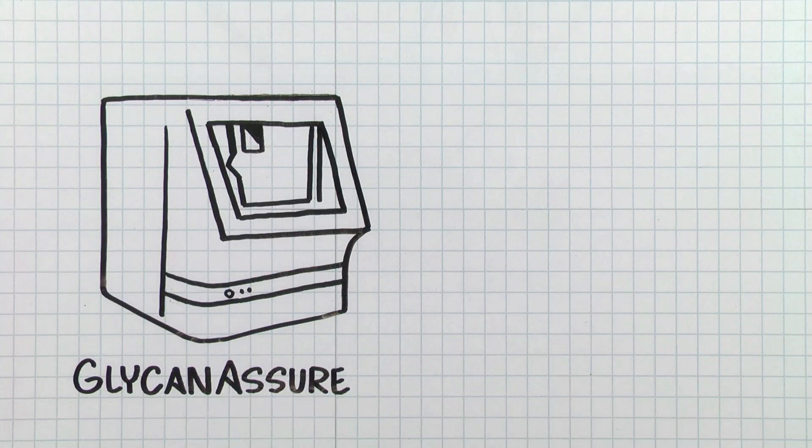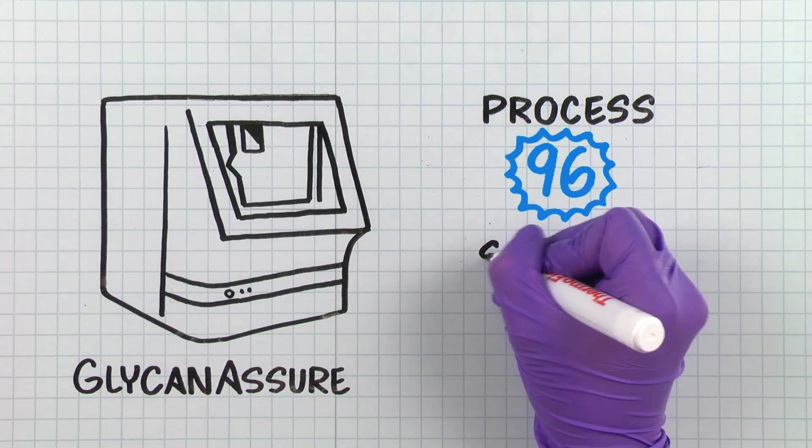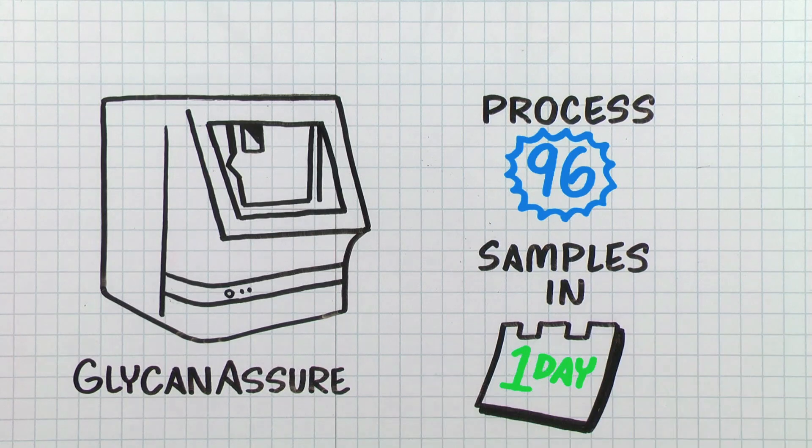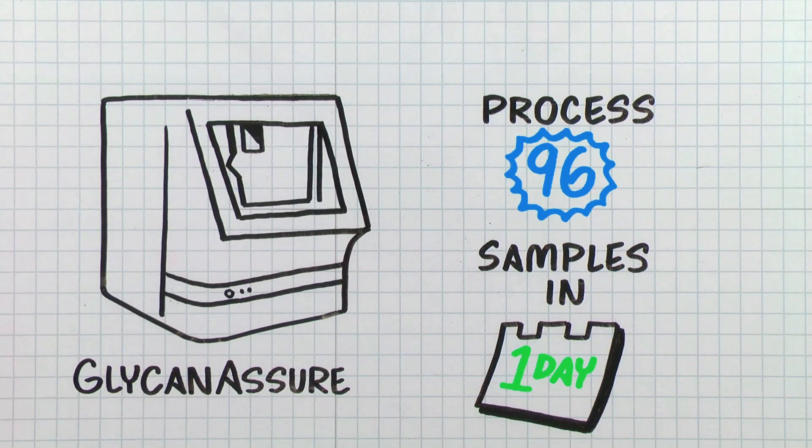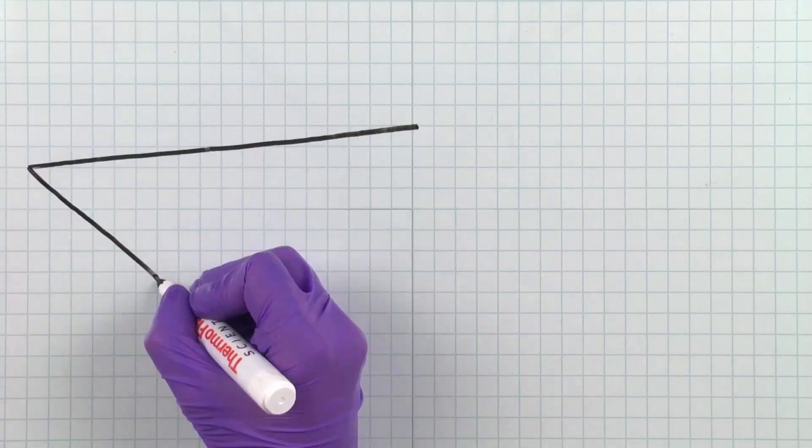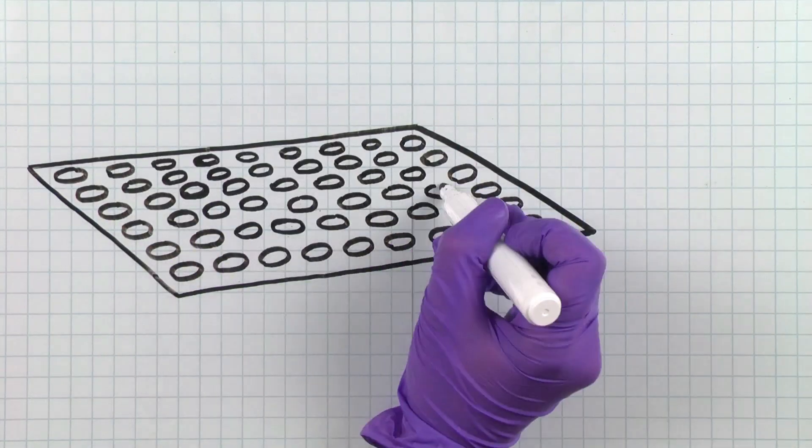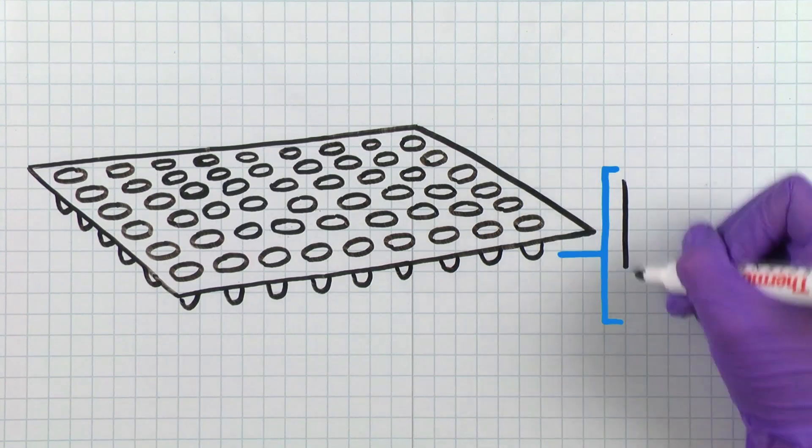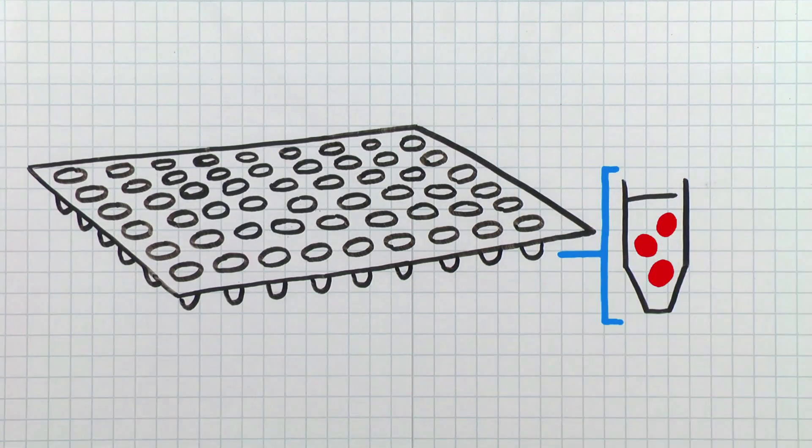With the CE-based Glycan Assure system, you can prepare, process, and analyze 96 samples in one workday. Moreover, it is the only system that gives you both high-throughput and high-resolution. Its magnetic bead-based sample prep method uses highly sensitive dyes that enable use of very small amounts of sample.